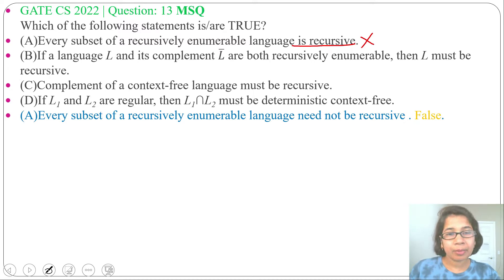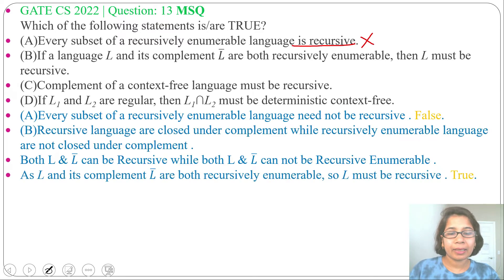L and L̄ both can be recursive, but L and L̄ both cannot be recursively enumerable. As L and L̄ are both recursively enumerable, L must be recursive. That's why its complement is recursive, and recursive is a subset of recursively enumerable, which is why L̄ is recursively enumerable. So the second statement, option B, is true.